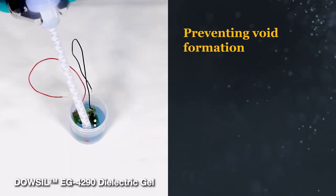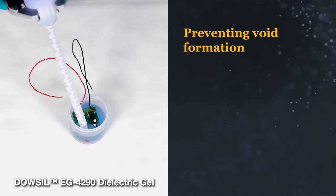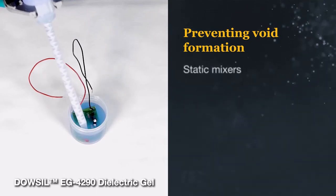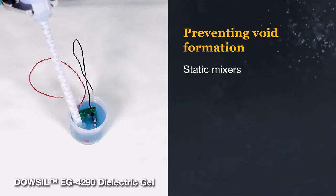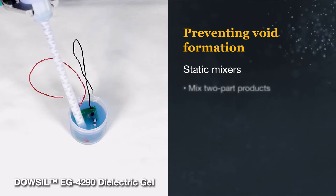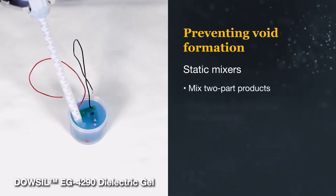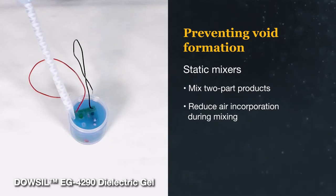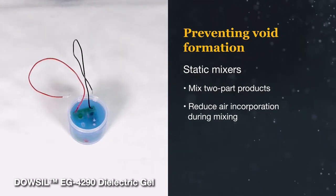The best way to prevent void formation in cured products is to avoid mixing air into the materials during the mixing process. One method to achieve this is to use a static mixer when dispensing two-part materials. Static mixers can reduce the amount of air incorporated into a product during mixing.